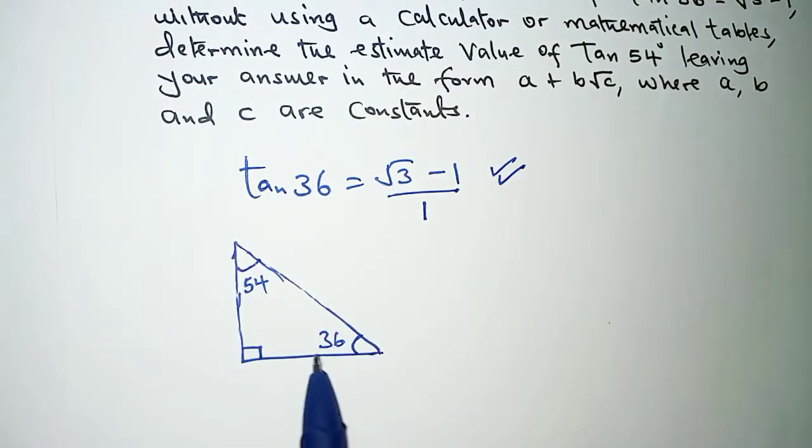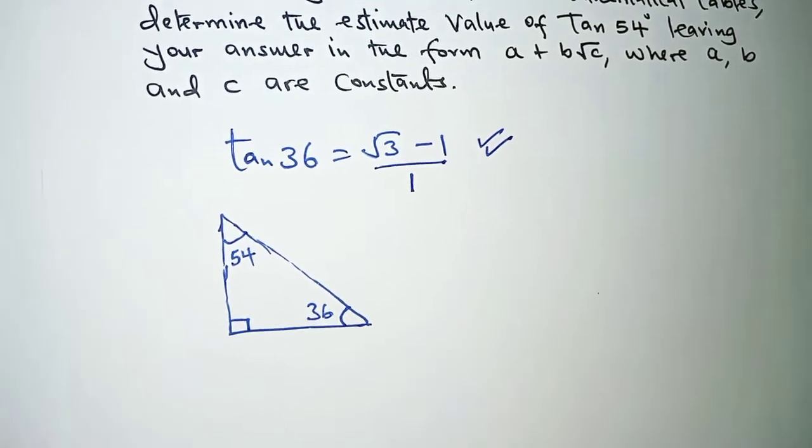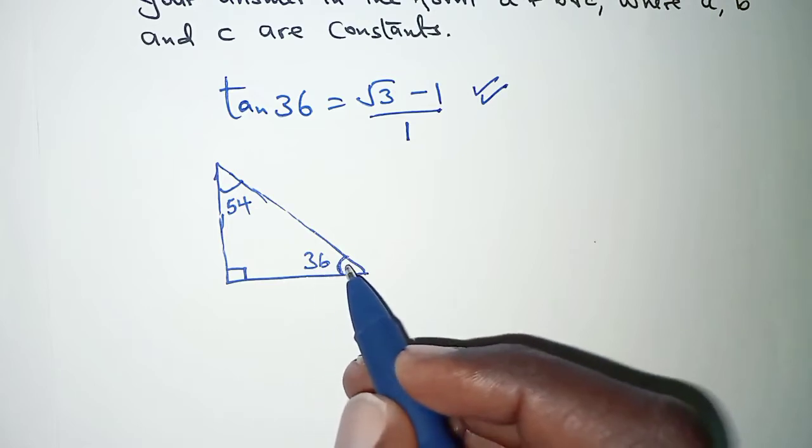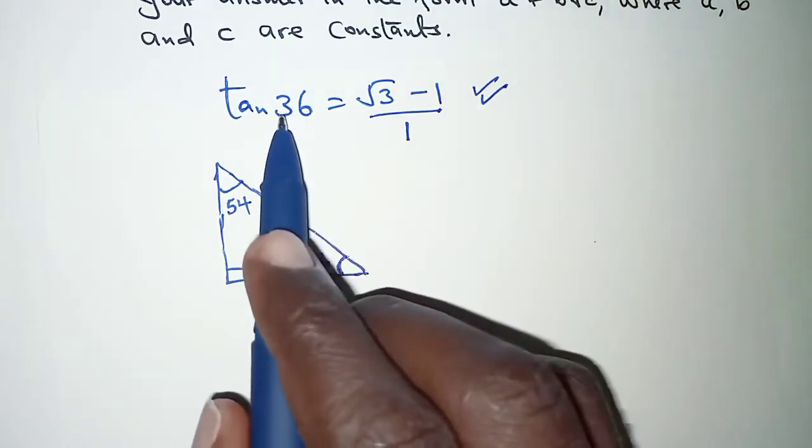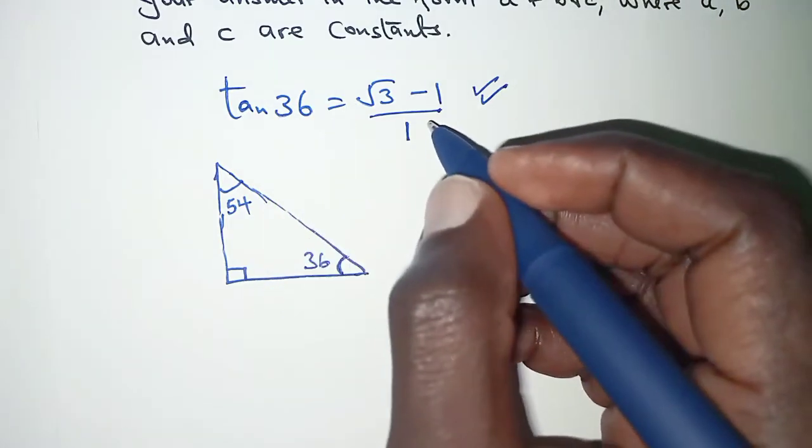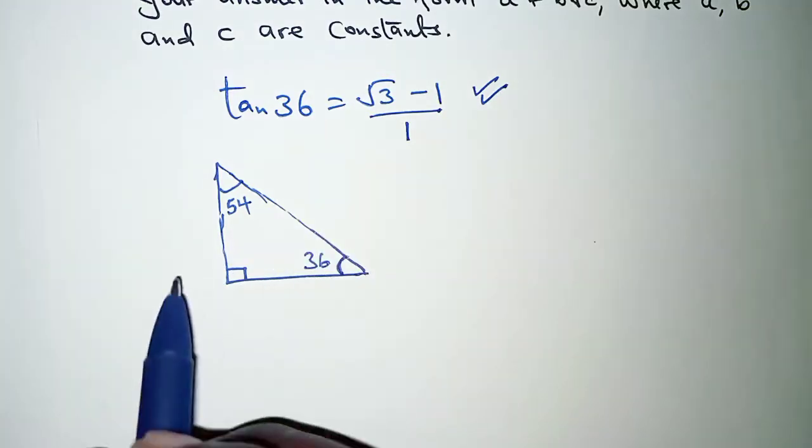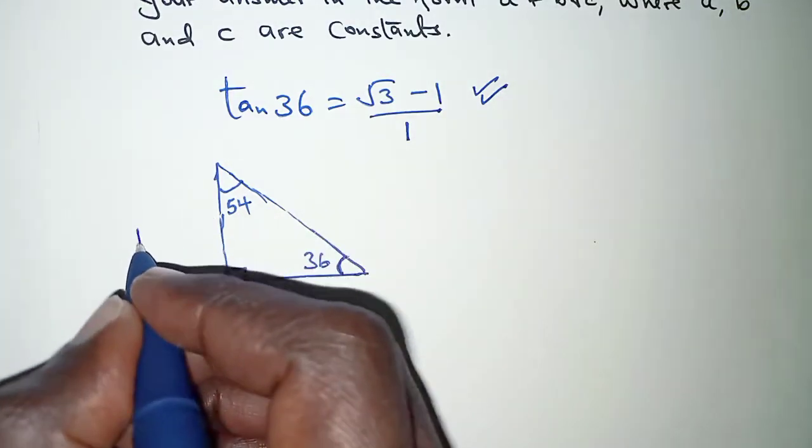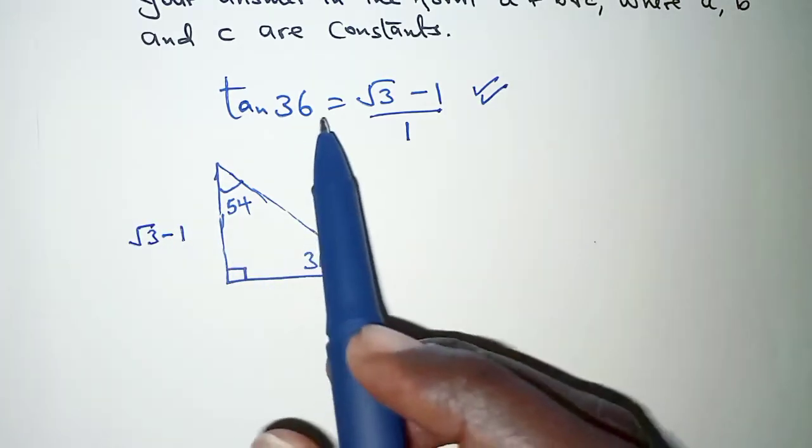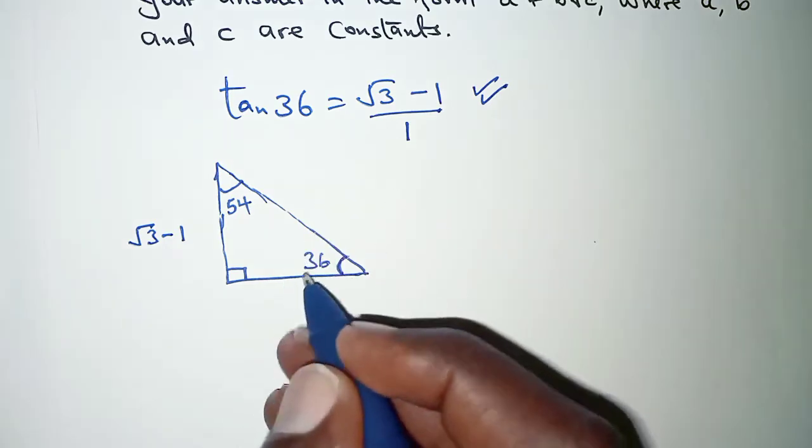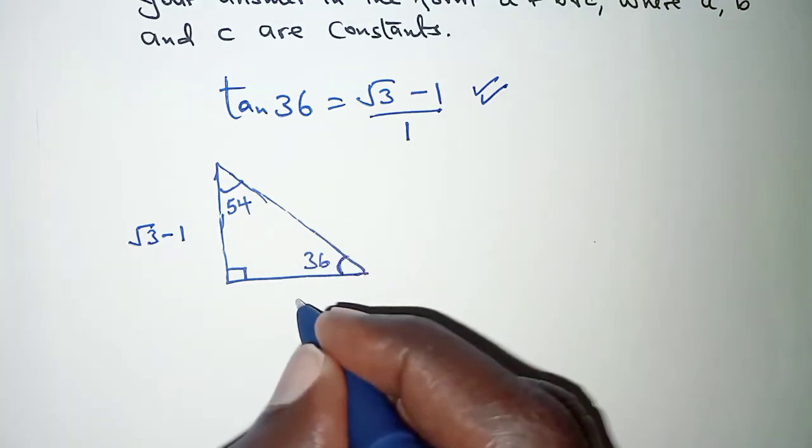So at 36 we know that tangent is given as opposite over adjacent, so the opposite side is here which we're told is the numerator here, root 3 minus 1. So it's opposite over adjacent and the adjacent is this side and adjacent is given as 1.